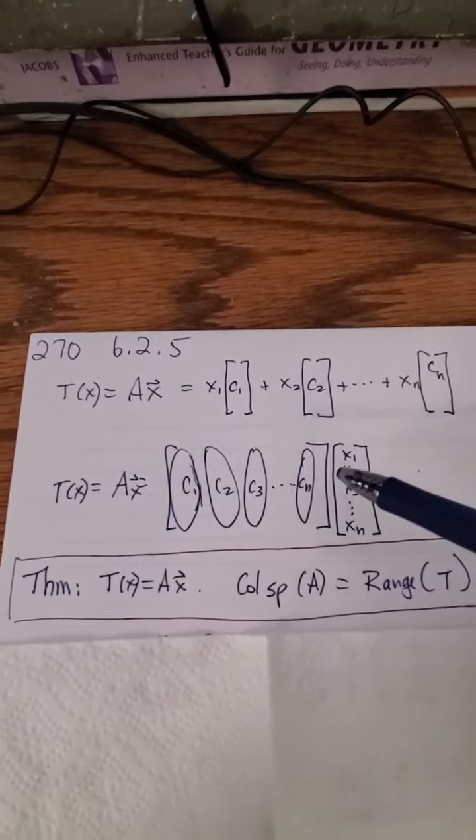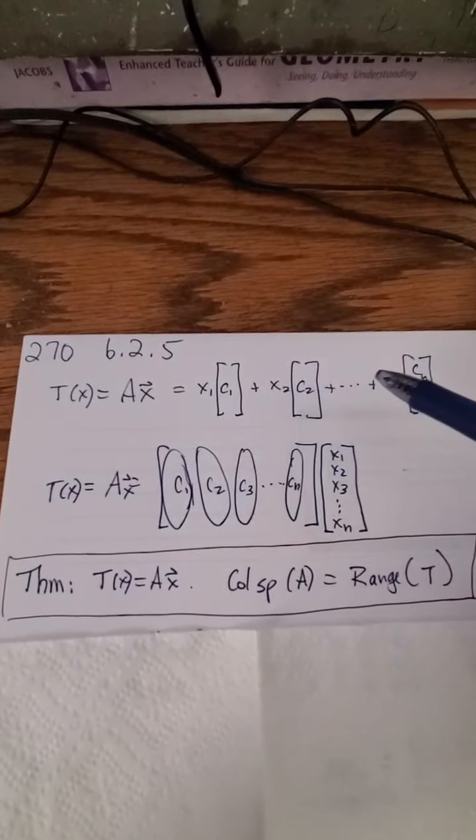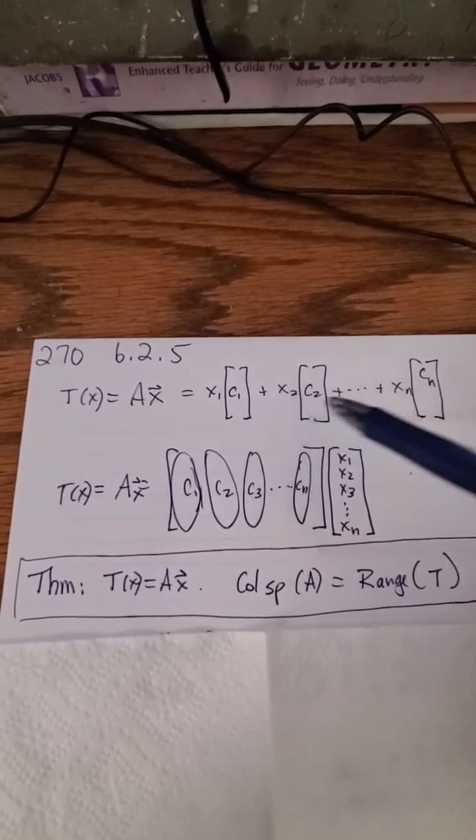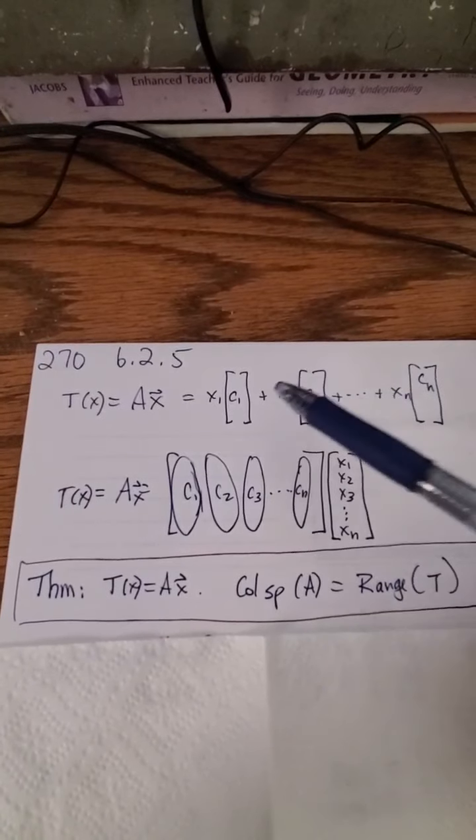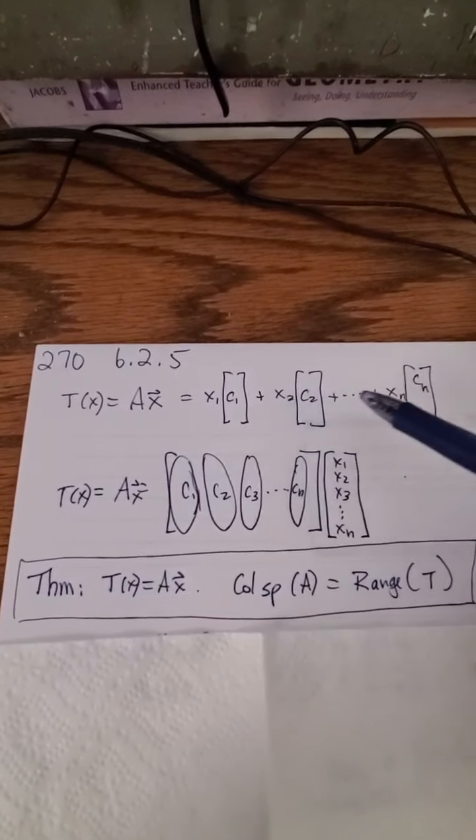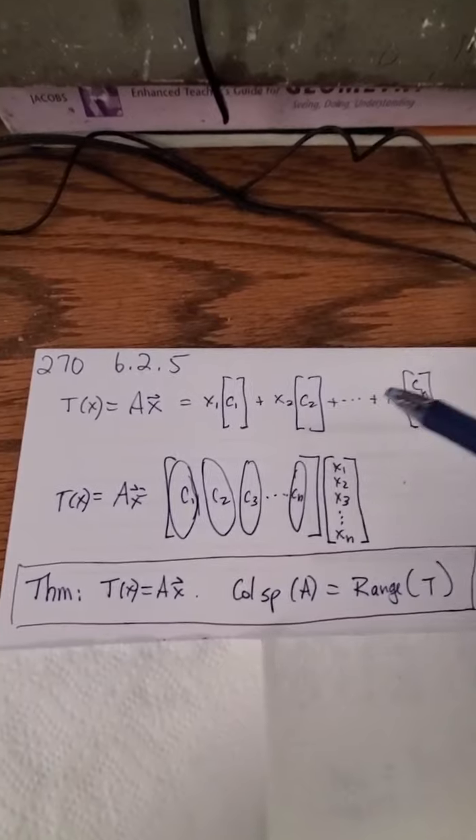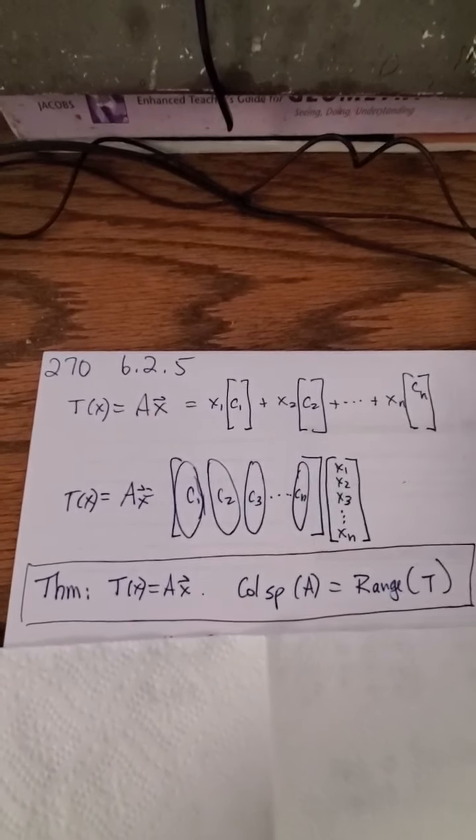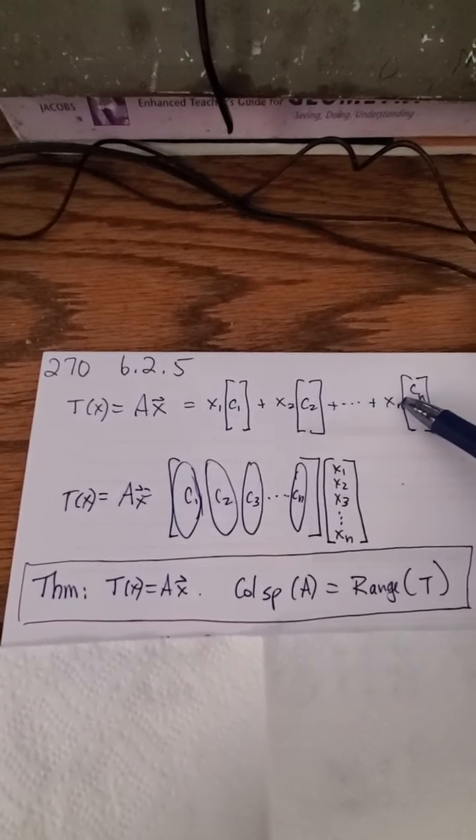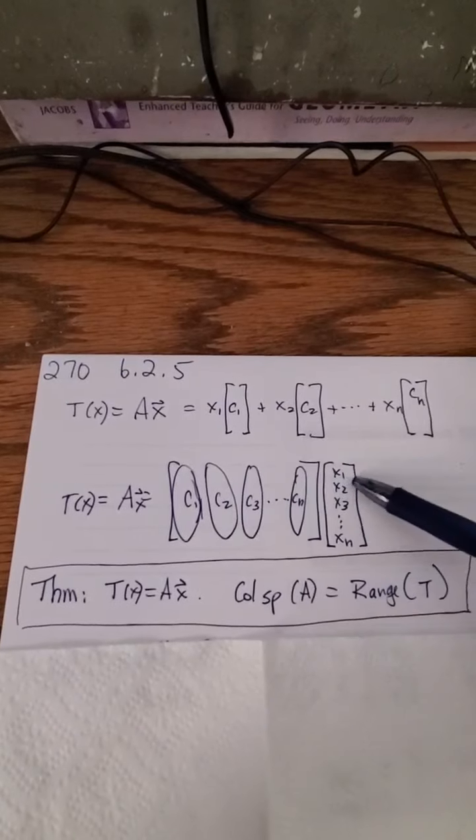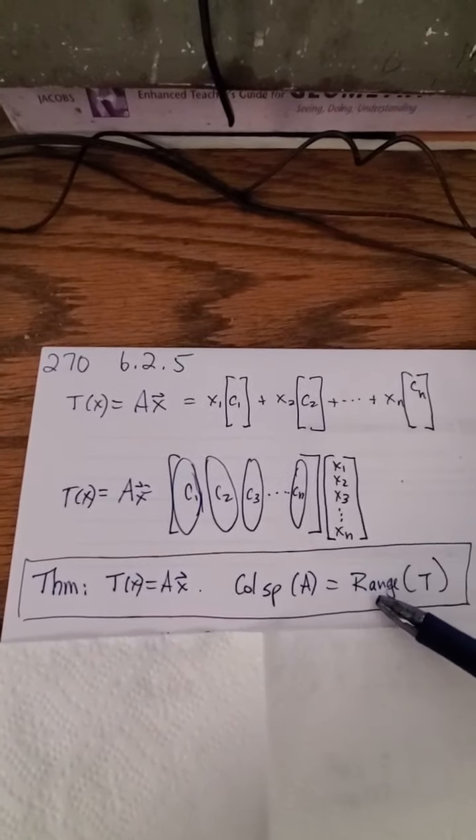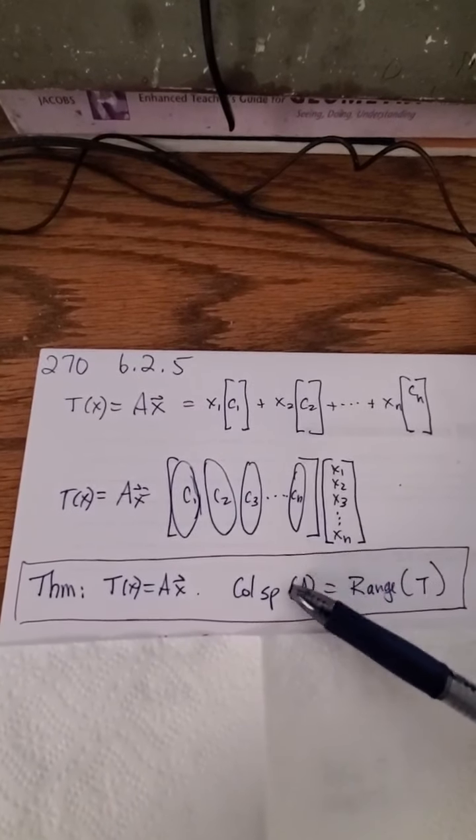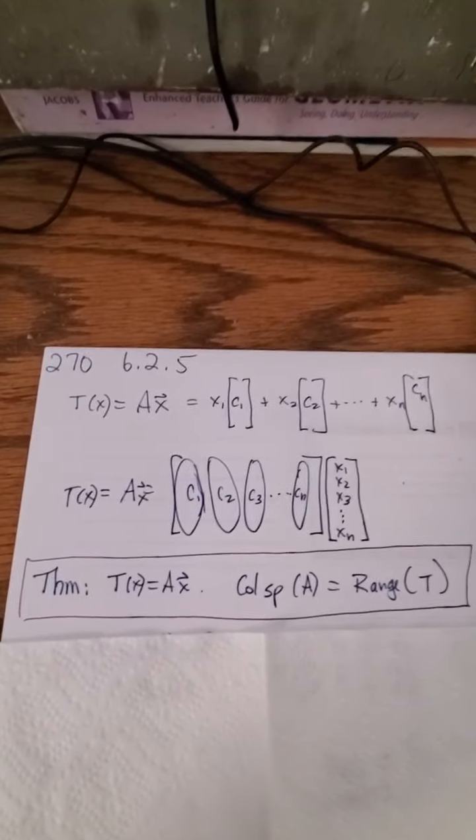the range of T is essentially the same as the column space of the matrix A, because I'm taking all the columns of A. The x1, x2, x3 goes to all the different scalars, so basically this is the column by definition of the column space, this is the range. So we see a theorem that the range of a linear transformation is the same as the column space of the matrix upon which the transformation is based.